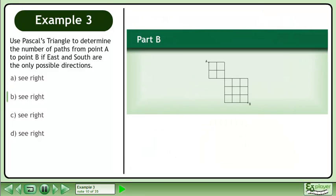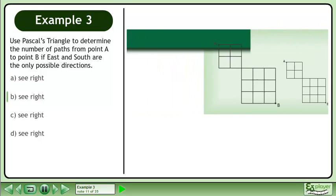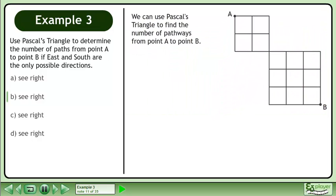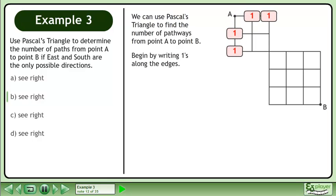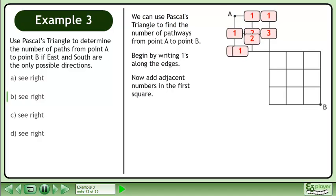Now we'll move on to part B. We can use Pascal's triangle to find the number of pathways from point A to point B. Begin by writing ones along the edges, then add adjacent numbers in the first square.